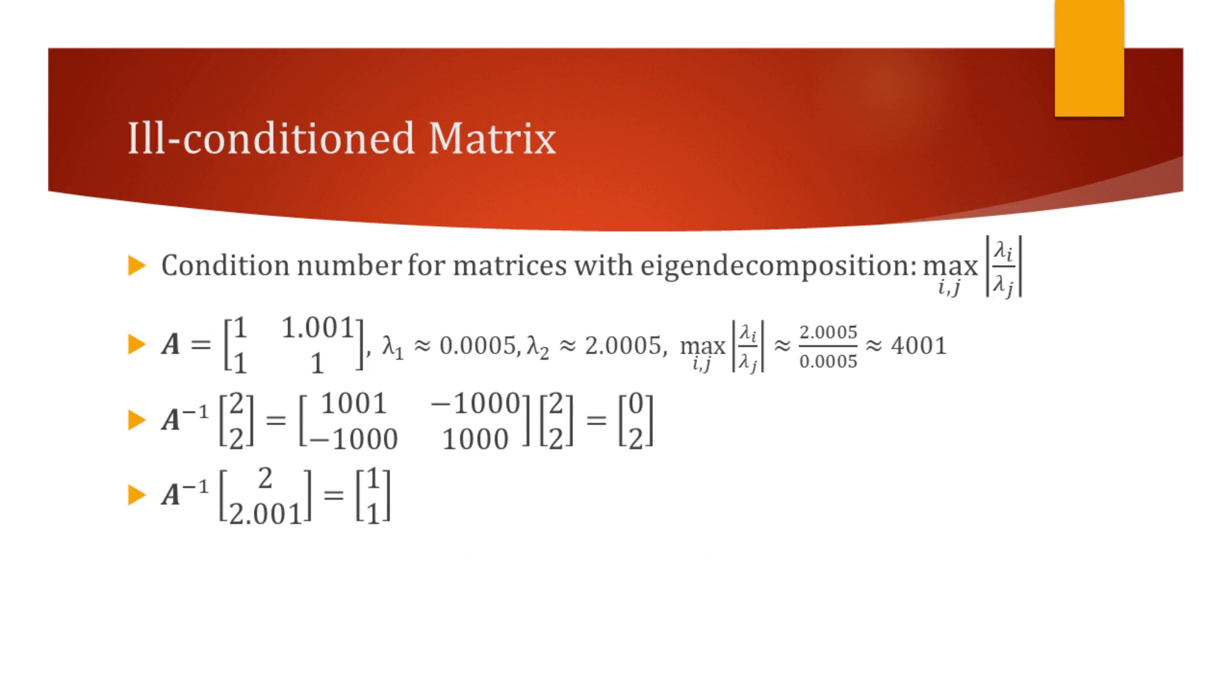Consider the matrix A. We see its eigenvalues on the right. Using the previously described formula, we find that its condition number is 4001. When the condition number is significantly greater than 1, the matrix is said to be ill-conditioned.